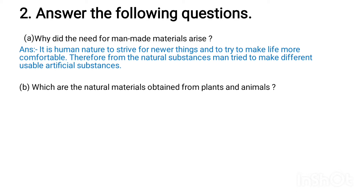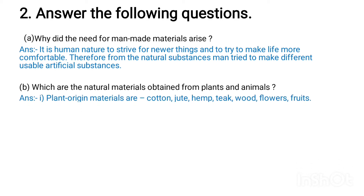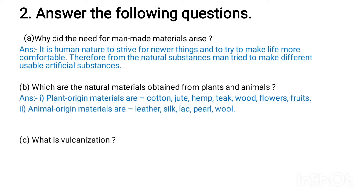Question 2b: Which are the natural materials obtained from plants and animals? Answer: First, plant origin materials are cotton, jute, hemp, tea, wood, flowers, and fruits. Second, animal origin materials are leather, silk, black pearl, and wool.